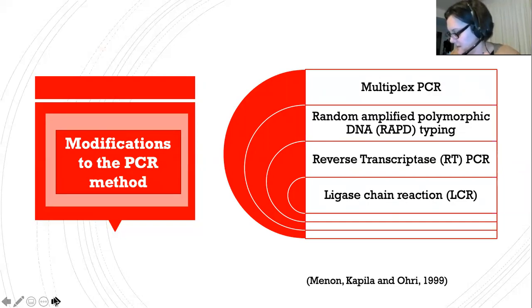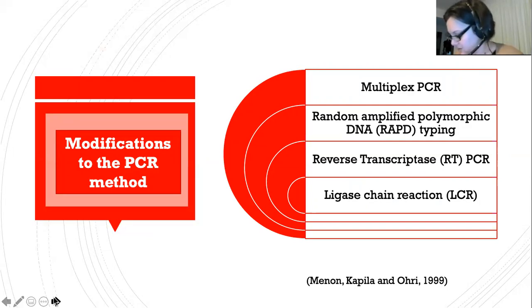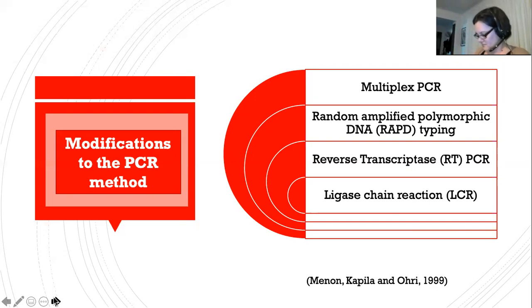Reverse transcriptase PCR uses RNA as the initial template rather than DNA. Through the process of retroviral reverse transcriptase, the template RNA is converted to complementary DNA, which is then amplified. This method has important applications in the detection of the RNA virus human immunodeficiency virus, better known as HIV, and tracking of the anti-retroviral therapy treatment effect in HIV patients. Lastly, ligase chain reaction is where two primers on each of the complementary single-stranded template DNA attach alongside each other to form the whole target sequence. DNA ligase, an enzyme that facilitates the joining of the two primers by their phosphodiester bonds, creates a complete double-stranded segment.